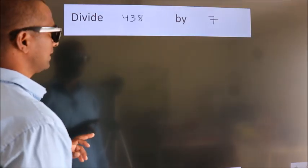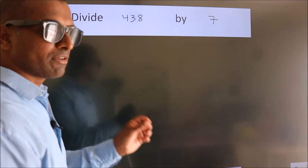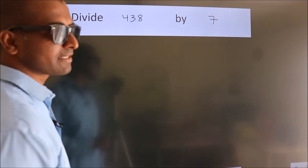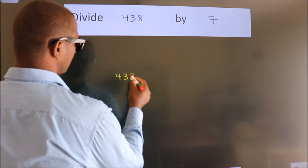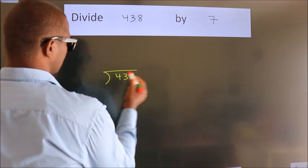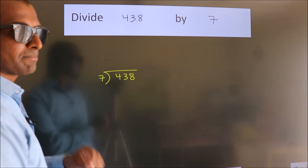Divide 438 by 7. To do this division, we should frame it in this way: 438 here, 7 here. This is your step 1.